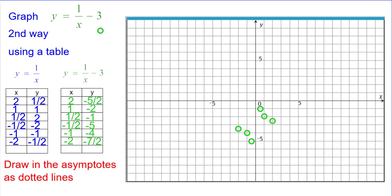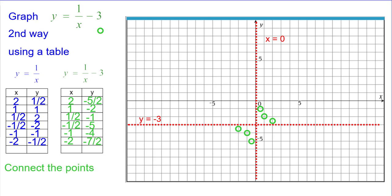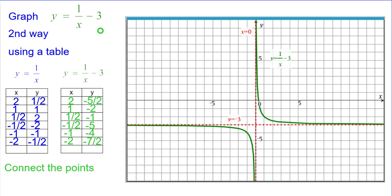Again, connecting the points. Well, we'll draw on the asymptote lines first. I think that would be wiser. Okay, so y equals negative 3 and the y-axis x equals 0. And now we should connect the points and make a beautiful hyperbola with two branches.